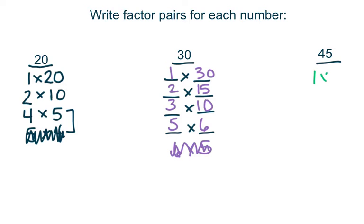One times forty-five. Three times fifteen. Nothing times four. Five times nine. Nothing times six. Nothing times seven. Nothing times eight. You would get back to the turnaround fact. All right.